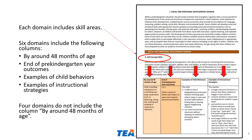There are four domains that do not include the column by around 48 months of age, as there is no research to guide the inclusion of this category in those four domains. Those four domains are science, social studies, fine arts, and technology.